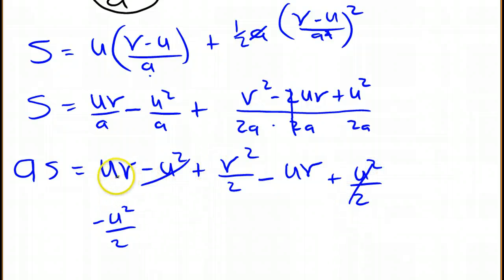And then I've got a uv and a minus uv. They're going to cancel each other out and disappear. And then I have to add to this a v squared over 2. And that's all equal to a times s.